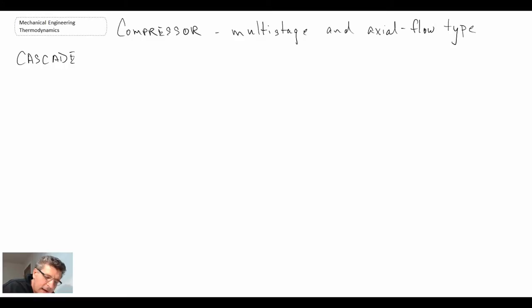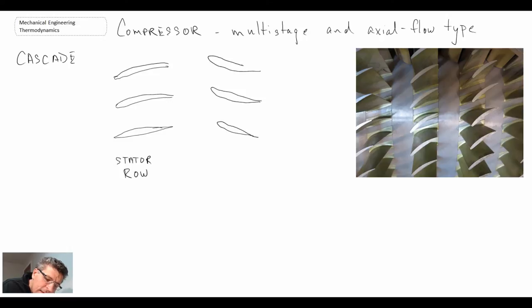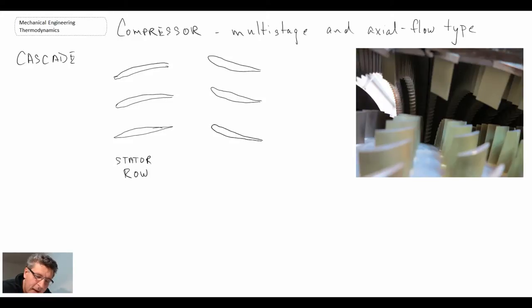Here what you'll have are compressor blades that are very thin, and you'll have a stator row. They call it the stator row because it's not moving, it's stationary, and that is followed by the rotors. These should all be identical. The rotor is rotating.